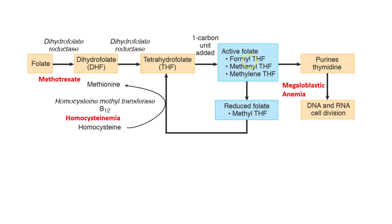Formyl, methanol, and methylene tetrahydrofolate are the active folates. They take part in purine and pyrimidine synthesis, which is required for cell division and RNA and DNA synthesis. They form methyl tetrahydrofolate, which is the reduced form of folate that helps in regeneration of tetrahydrofolate.